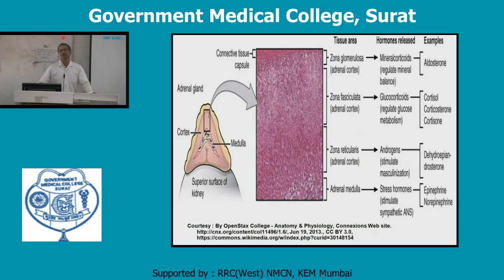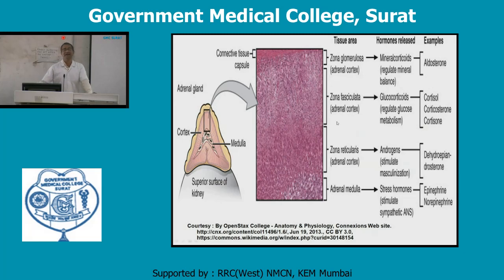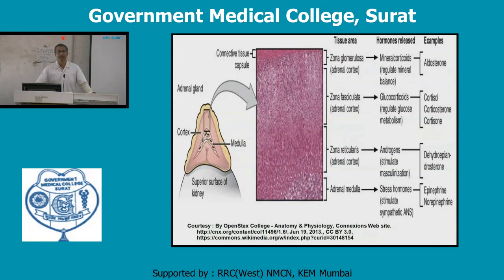The main secretions of the cortex are aldosterone and cortisol. In addition, in the fetal suprarenal gland there is secretion of dehydroepiandrosterone (DHEA), which helps in the formation of androgens and estrogens during fetal life with the help of the placenta. This is why the cortex is thicker and the suprarenal gland is larger during fetal life.